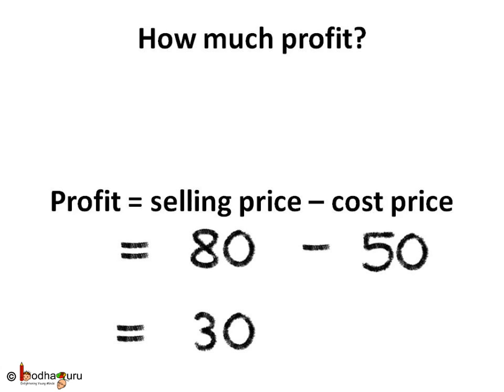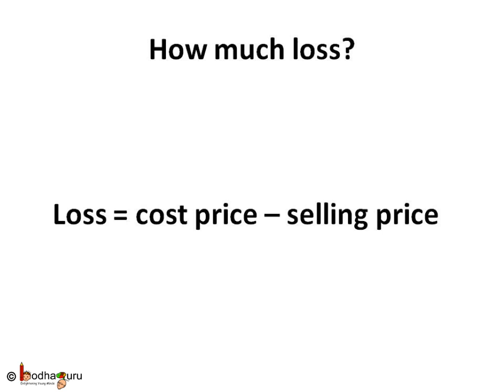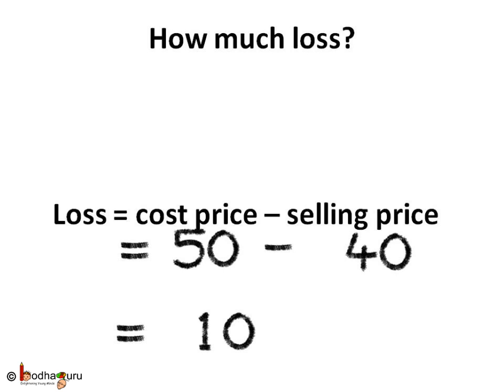When Rahim bought vegetables for 50 rupees and made 80 rupees by selling the sandwiches, his profit was 80 minus 50, which is 30 rupees. And what is loss? Well, we subtract the smaller number from the bigger number. When Rahim makes a loss, cost price is greater than the selling price. So loss is equal to cost price minus selling price. When Rahim bought vegetables for 50 rupees and managed to earn only 40 rupees, he made a loss. Cost price 50 minus selling price 40 is 10. So 10 is the loss.